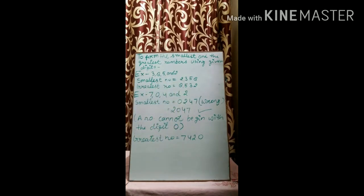Greatest number: For greatest number we always start from the greatest digit. 8 is the greatest digit, then 5, then 3, and then 2. So greatest number is 8532.